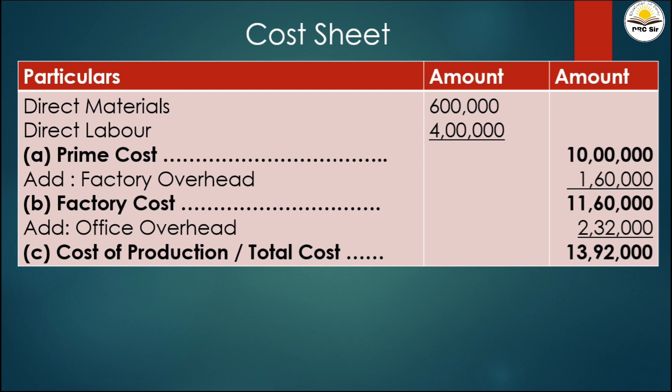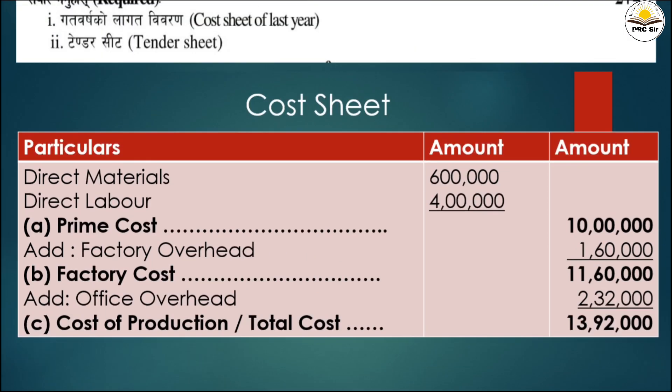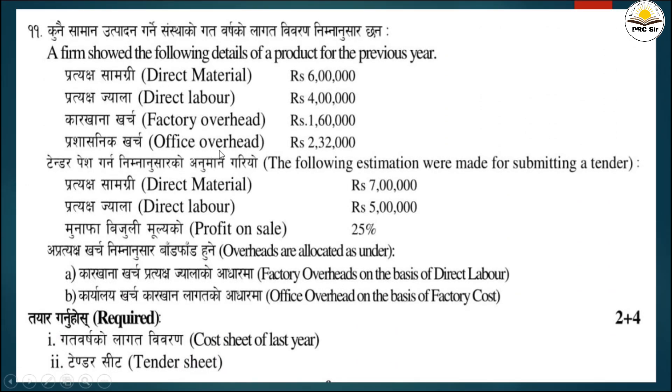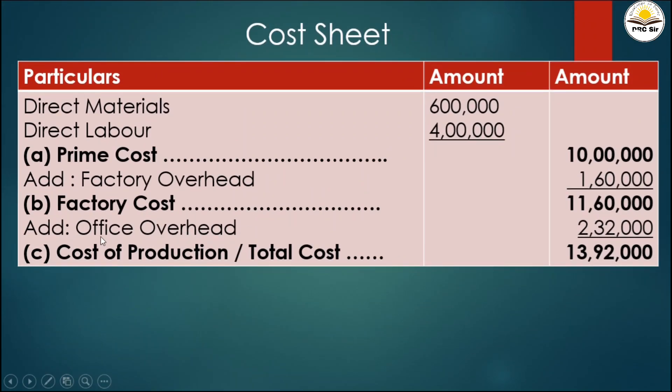After factory cost, we add office overhead. The office overhead given is 2 lakh 32 thousand. Factory cost plus office overhead equals 13 lakh 92 thousand, which is the cost of production or total cost. This calculation section is worth two marks, so we can move to the next section.